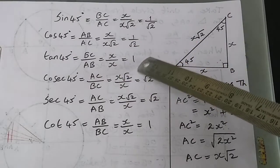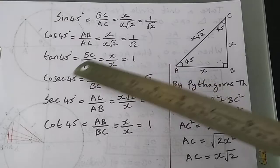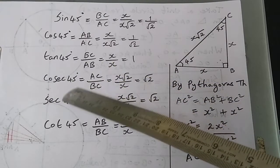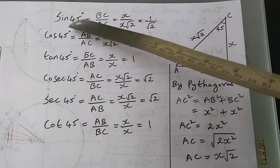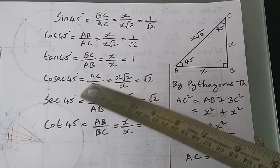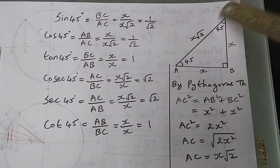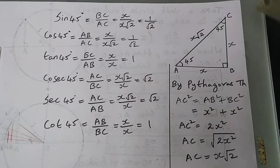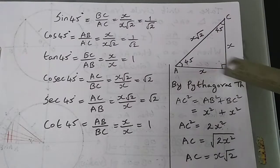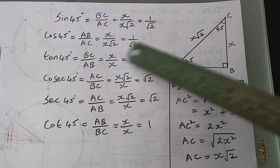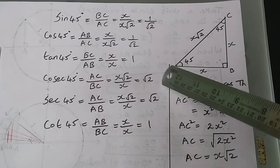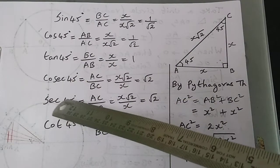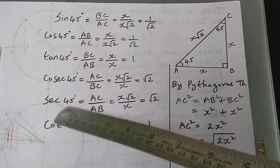Next, cosecant 45 is the reciprocal of sin 45, that is AC/BC, so X√2 divided by X — the X's cancel — and cosec 45 = √2.